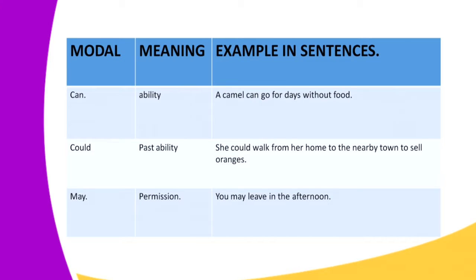Next we have 'may,' and 'may' means permission. If you want to ask permission from your teacher, employer, or anyone else, then you use the modal 'may.' For example: 'You may leave in the afternoon' — that means you have been granted permission to leave in the afternoon. 'You may leave it at the doorstep' — you've been granted permission to leave whatever it is at the doorstep.